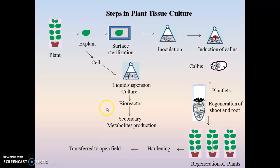If a cell is used as an explant with a liquid suspension nutrient media, then suspension culture is used. The cell grows in suspension culture and forms a callus, which is then divided and added into a bioreactor. The bioreactor contains sufficient nutrient media needed for growth, and this method is used for the production of secondary metabolites.